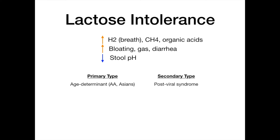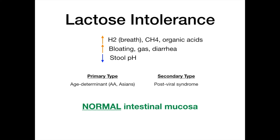A really high-yield point: after a bad gastroenteritis, you could develop symptoms of lactose intolerance. Importantly, if you do a biopsy, you'll see normal intestinal mucosa — this is a very high-yield buzzword. With so much GI pathology tested on USMLE and COMLEX, knowing that lactose intolerance shows normal intestinal mucosa helps you rule things in or out on your differential.